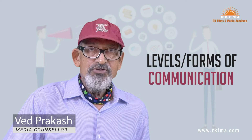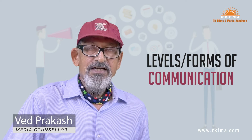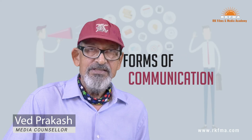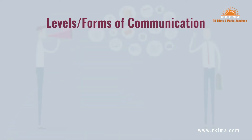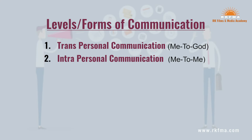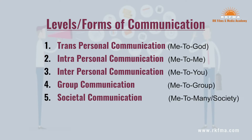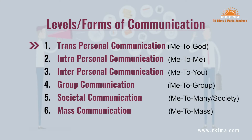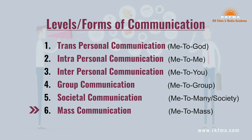Sanchar ki kai levels hain, kai swaroop hain, and these levels are based on the number of persons participating in the process of communication. As you can see, there are normally six levels of communication: transpersonal communication, intrapersonal communication, interpersonal communication, group communication, societal communication, and mass communication.